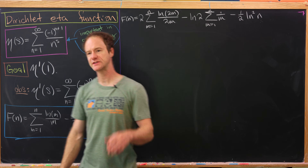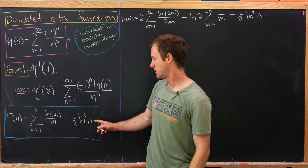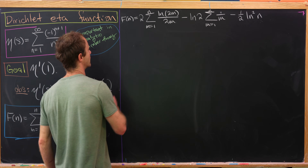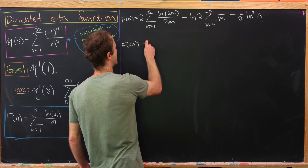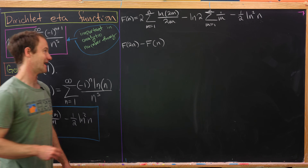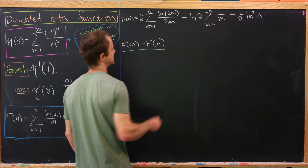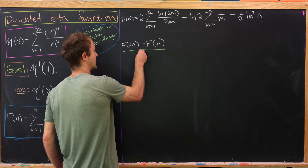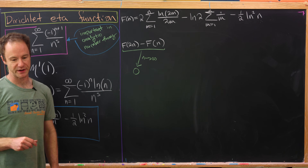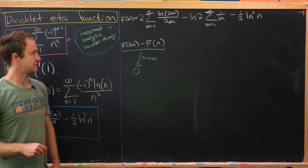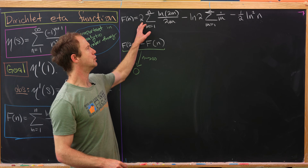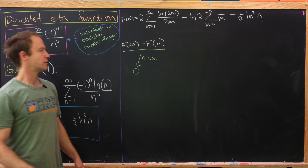Now we look at the difference f evaluated at 2n minus f evaluated at n. Since f of n converges to a finite number, as we let n go to infinity this difference converges to zero — and that's going to be really important at the end. The trick is to use our original definition for f evaluated at 2n and our new way of rewriting it for f evaluated at n.